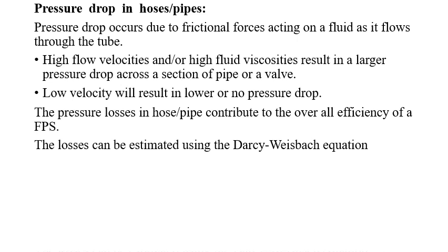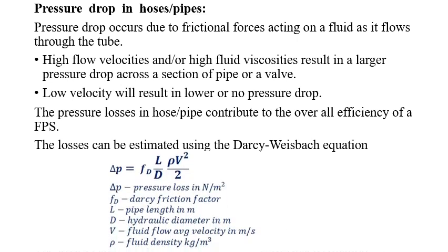The losses can be estimated using the Darcy-Weisbach equation: ΔP = f_D × (L/D) × (ρV²/2), where ΔP is pressure loss in N/m², f_D is the Darcy friction factor, L is pipe length in meters, D is hydraulic diameter in meters, V is the fluid flow average velocity in m/s, and ρ is fluid density in kg/m³.